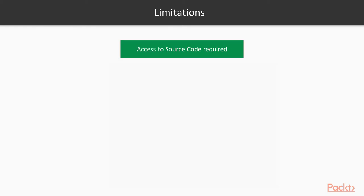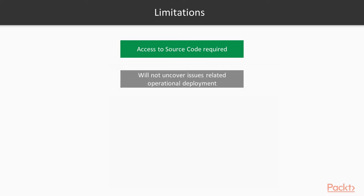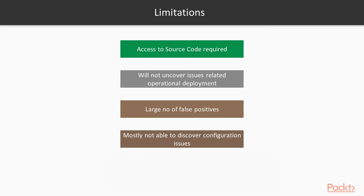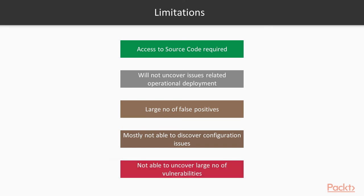While static application testing has advantages, it does have some limitations. Static tools need access to source code — if source code is not available, SAST cannot be done. Often there are issues associated with the operational state of an application that static tools cannot uncover. The reports given by static tools should be taken with a pinch of salt, as issues may be reported where a developer has made a conscious decision to structure the program in a particular way. Static tools are also not effective at detecting configuration-related issues, and a large number of vulnerabilities can still remain hidden.